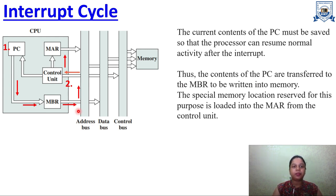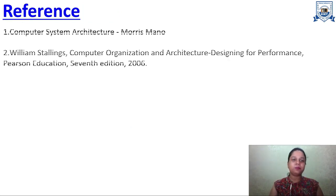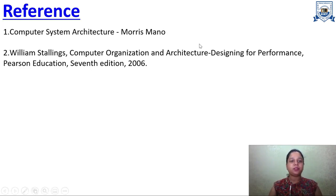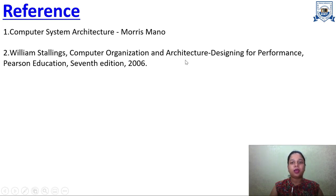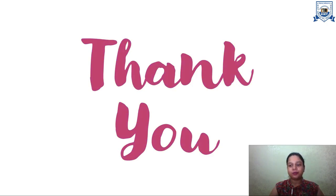Now we will see the references. There are two books from which you can learn Computer Organization and Architecture: first is 'Computer System Architecture' by Morris Mano, and second is 'Computer Organization and Architecture' by William Stallings. Thank you, hope you have learned something new from this video.